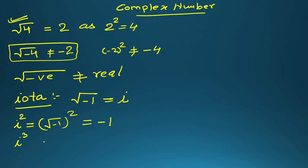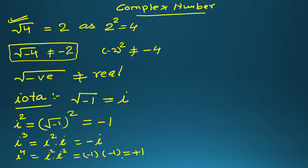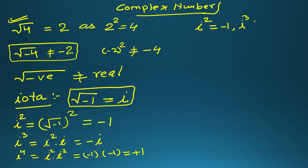Similarly, i cubed means i squared times i, which equals minus i. And i to the power 4 can be written as i squared times i squared, which is minus 1 times minus 1, equal to plus 1. So to summarize: i equals square root of minus 1, i squared equals minus 1, i cubed equals minus i, and i to the power 4 equals 1. Just remember these values.